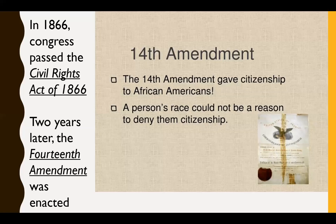Congress and the president were butting heads. Johnson thought the government should be lenient on the South and that African Americans didn't need these tools to help them. But Republicans controlled Congress and could override the president's veto — if Congress has enough of a majority, they can override a veto, and they did. Johnson vetoed both the Freedmen's Bureau and the Civil Rights Act of 1866, but Congress overrode both vetoes and they became law.